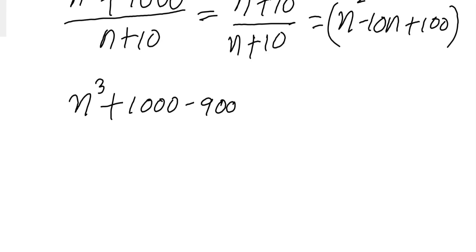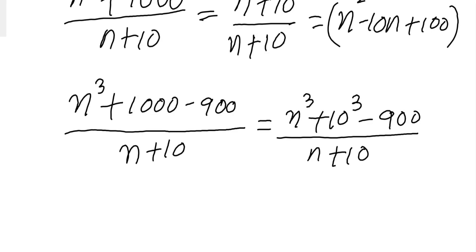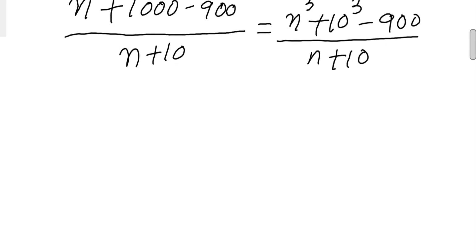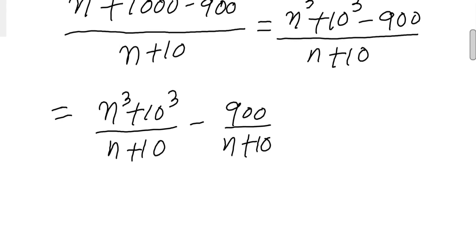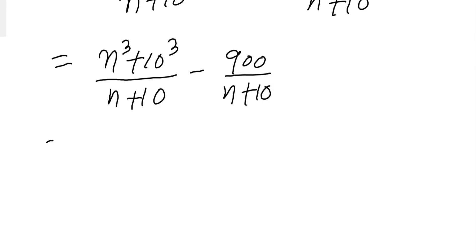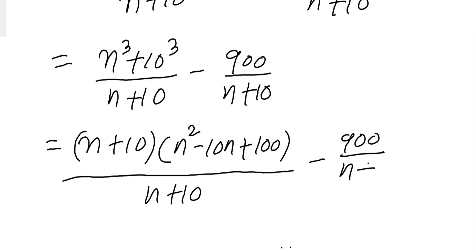This is equals to (n³+1000)/(n+10) minus 900/(n+10). Now you can see this can be nicely written. Now in order to be an integer, let's use the formula. We can say n+10, and now canceling this whole term.